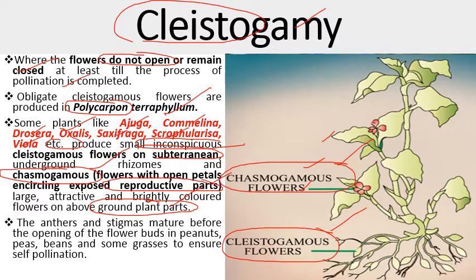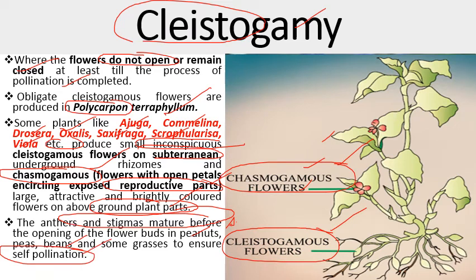The anther and stigmas mature before the opening of the flower bud in peanuts — Arachis hypogaea. There are also some beans and grasses which ensure the process of self-pollination through cleistogamy. So flowers which remain closed until the process of pollination is completed are known as cleistogamous flowers.